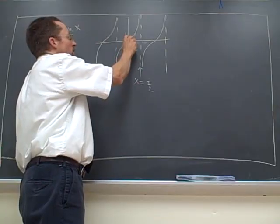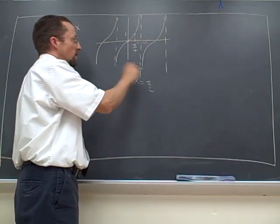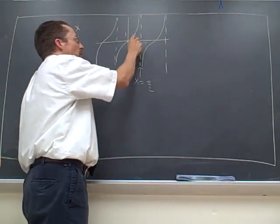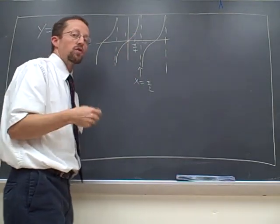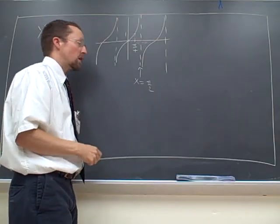Turns out, these are the landmarks for tangent. The asymptotes at pi over 2, and some others we'll discuss in a minute, at the origin, and at pi over 4 comma 1. Using those landmarks only, you usually can get a good graph of tangent and some modifications of tangent.